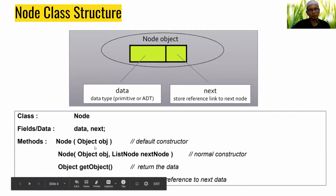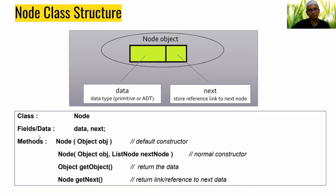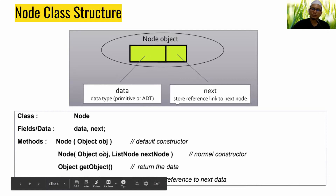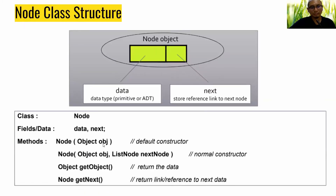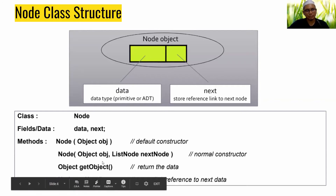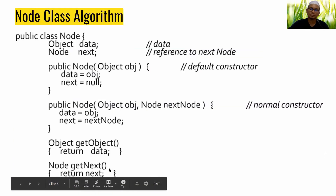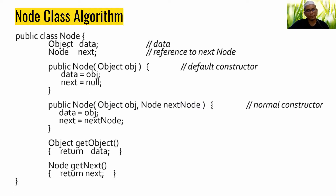So this class consists of two fields — data and next — and a constructor method for the Node class. It also has methods to get the object and get next. However, accessing the object will be specified in the LinkedList class.